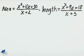If the area of a rectangle is x squared plus 11x plus 30 all over x plus 2, and the length is x squared plus 9x plus 18 all over x plus 3, find the width.